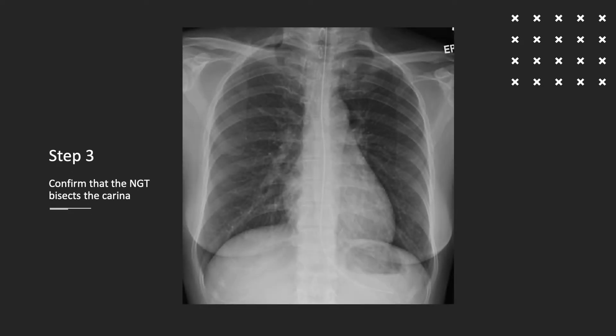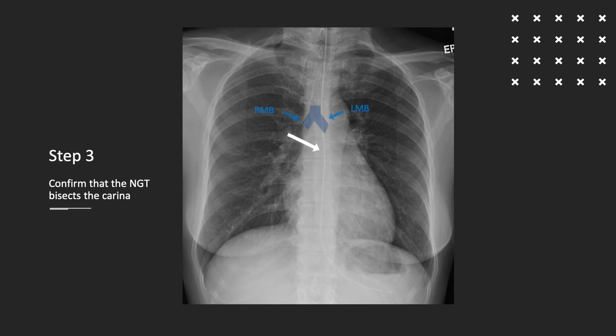The carina should be identified as the termination of the trachea as it bifurcates into the right and left main bronchus at approximately the level of T4 or T5. The nasogastric tube should be seen to bisect the carina. The right and left main bronchus should be separately identifiable, and the tube must not follow the course of the right or left main bronchus.